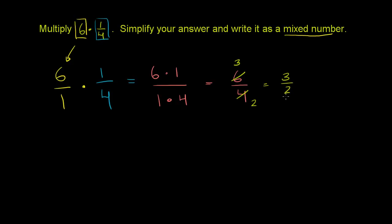So it's still written as an improper fraction. We now have to write it as a mixed number. And the process for writing it as a mixed number, you just divide the denominator into the numerator. So this just becomes 2 into 3. Divide 2 into 3. It goes, 2 goes into 3 one time.